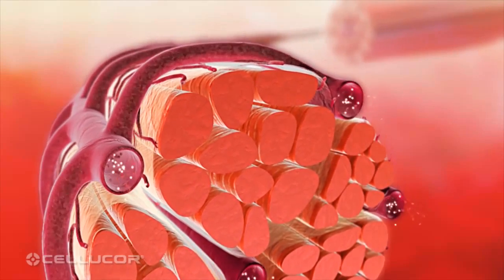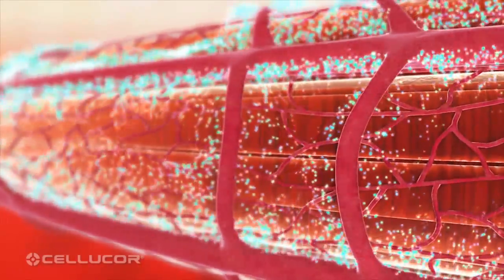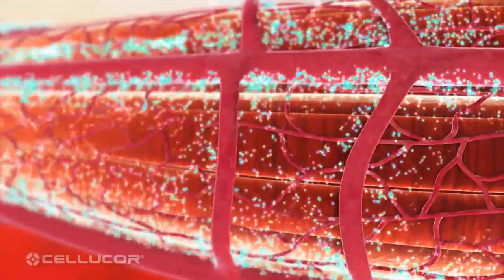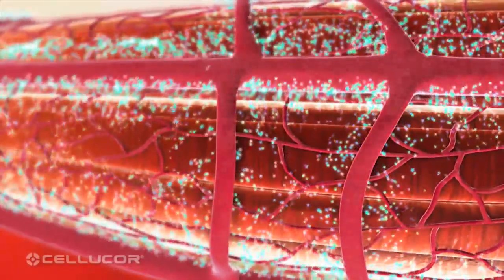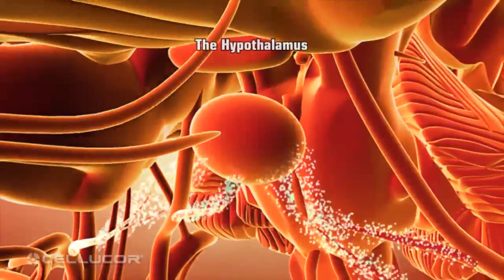Nitric oxide causes blood vessels to expand or vasodilate. Vasodilation increases blood flow to muscles, especially during intense training. The greater blood flow provides more oxygen as well as more vitamins, nutrients, and amino acids to muscle tissue.